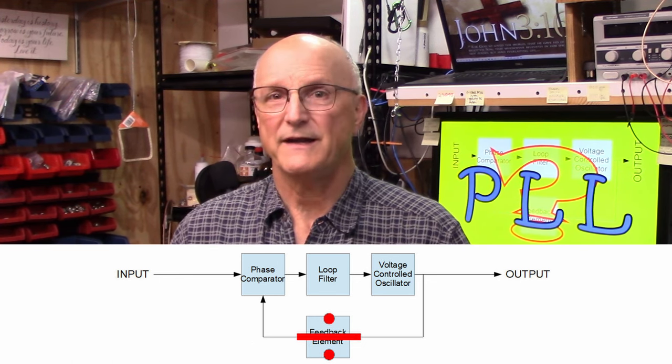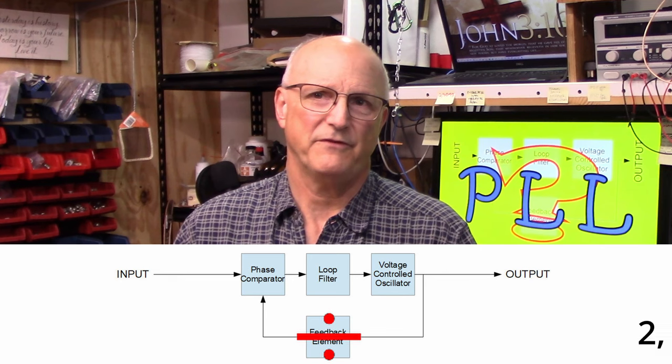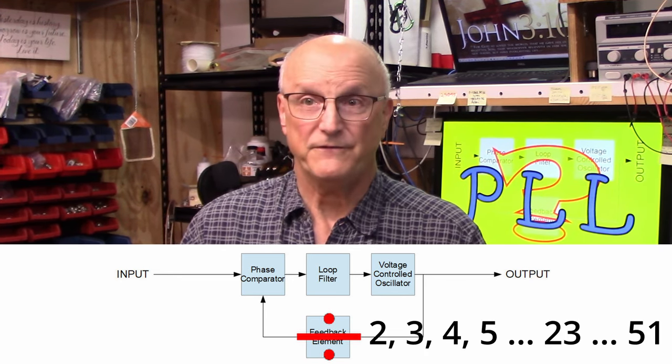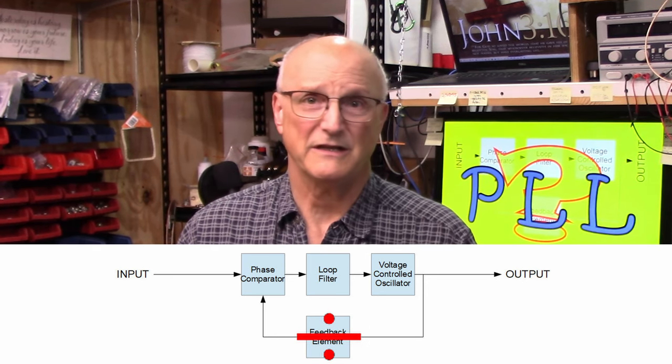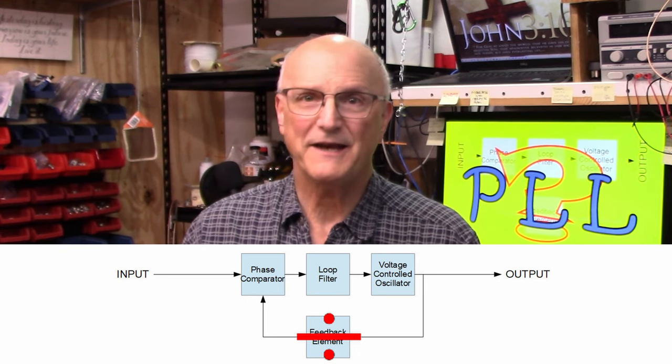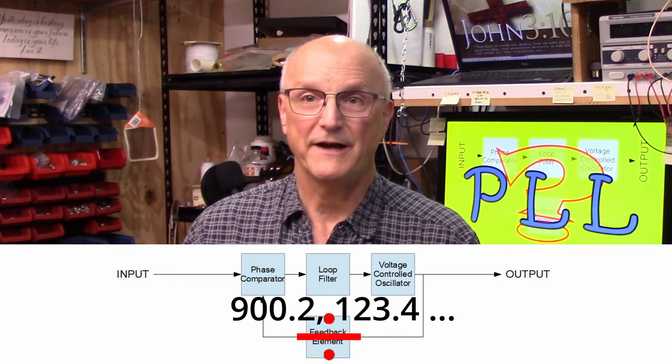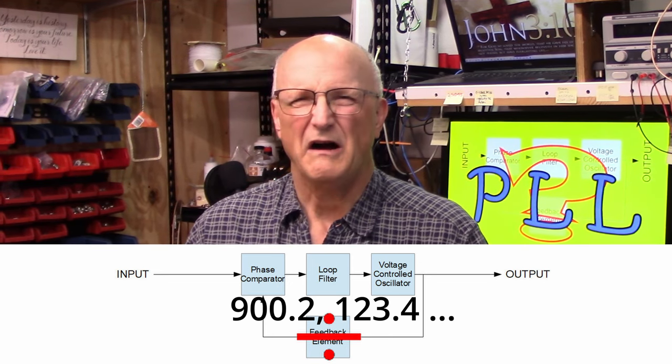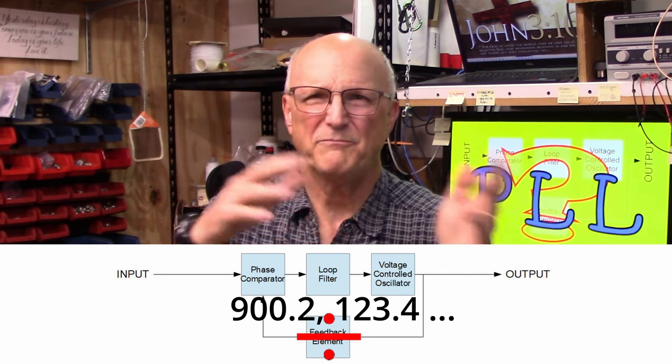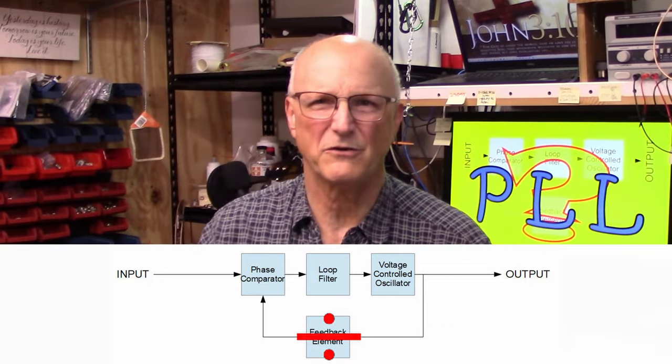But now, we can find PLLs sporting non-integer dividers. Divide by 900.2, or 123.4, or other odd combinations. And they do this with some pretty fancy, odd, hard to explain methods using multiple counters and jumping back and forth between them, and so on and so forth.